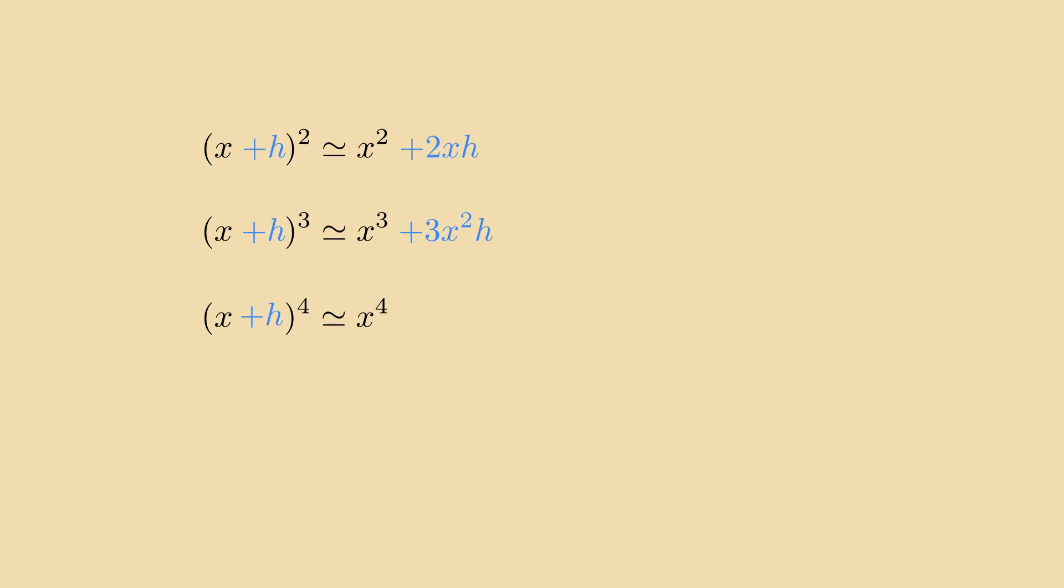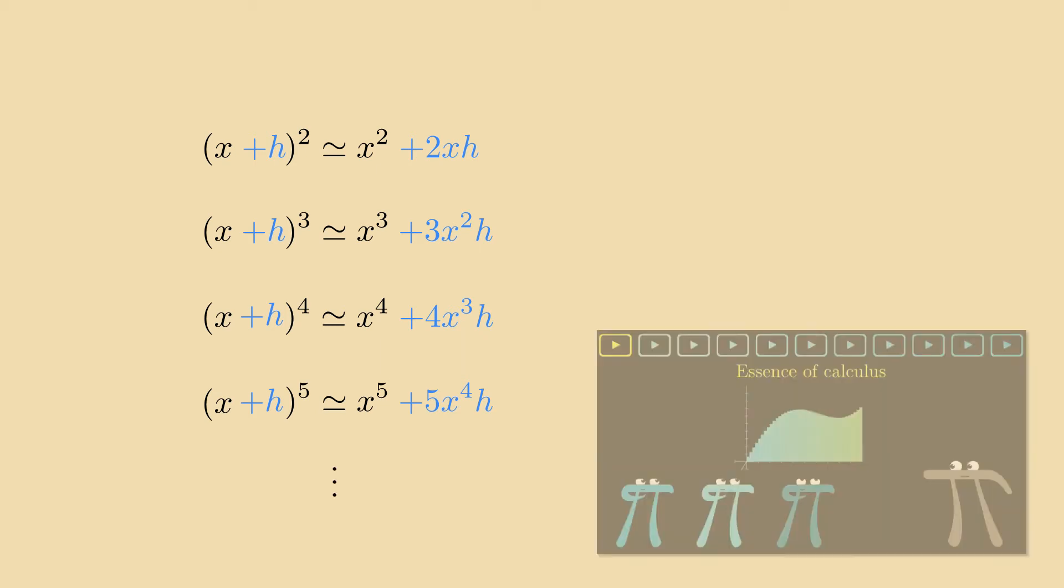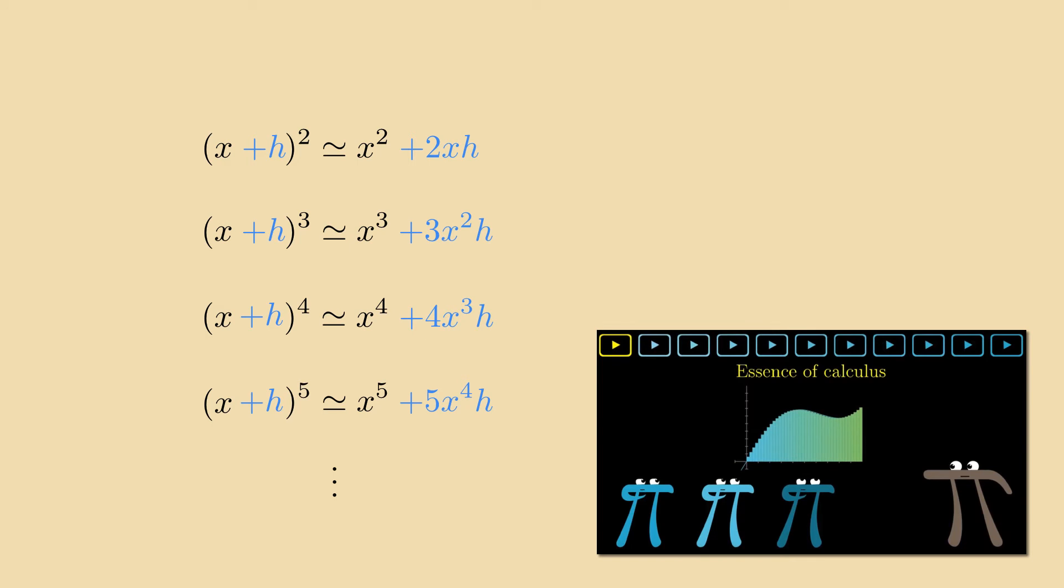x plus h to the 5th is approximately x to the 5th plus 5x to the 4h, etc. For more detail and a more thorough explanation, check out chapter 3 in the amazing series Essence of Calculus by 3Blue1Brown.